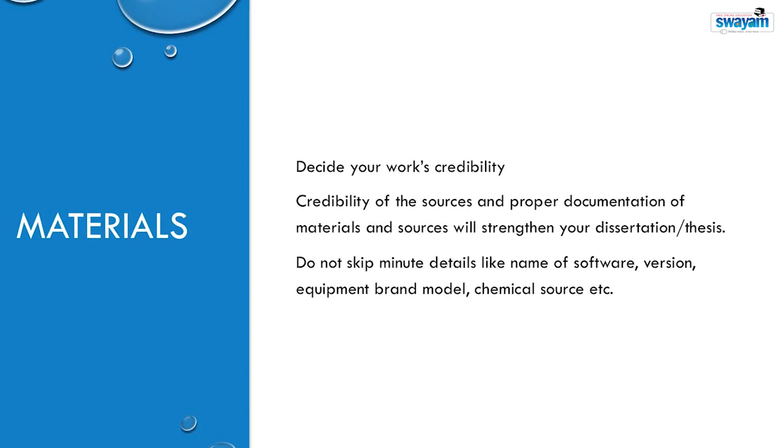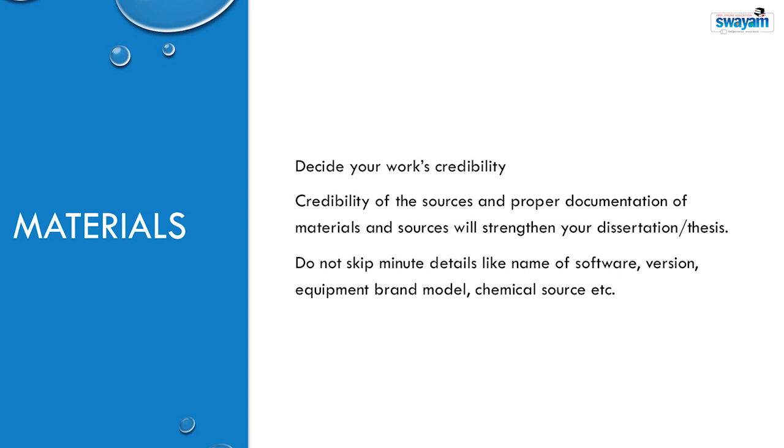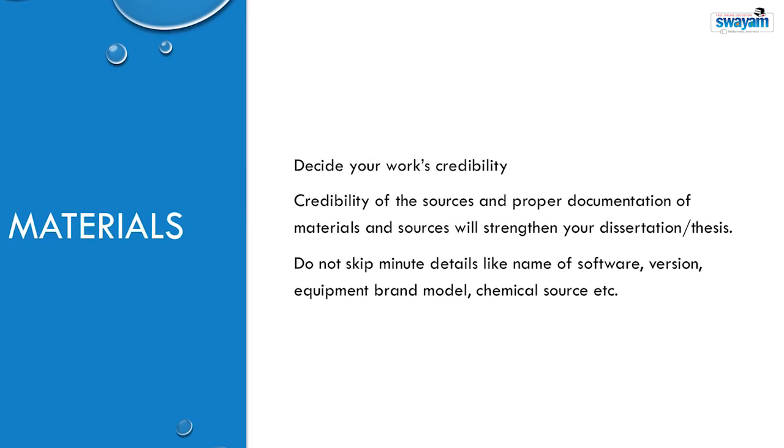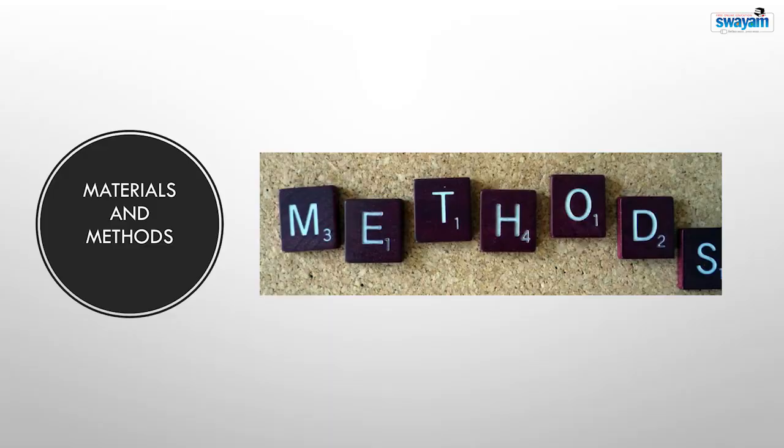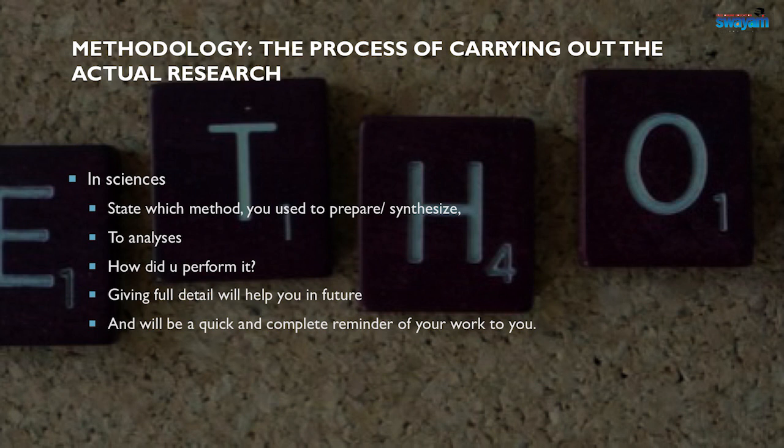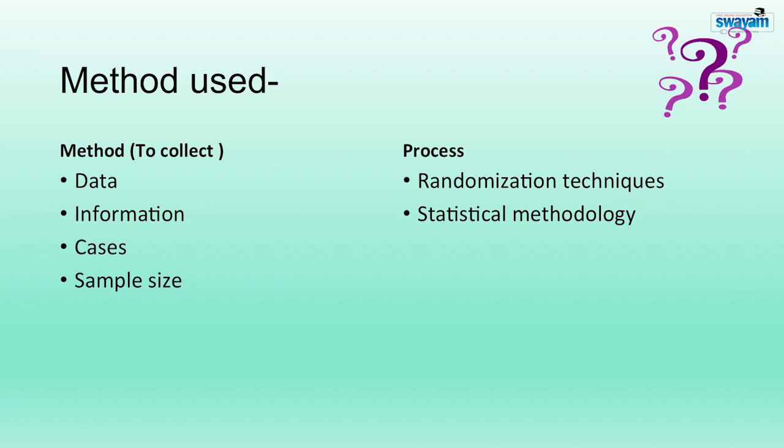Do not skip minute details like name of the software's version, equipment brand, model, chemical source, software etc. Now move to the method or methodology section. Methodology involves the process of carrying out the actual research. In case of sciences, state which method you use to prepare, synthesize, to analyze and how did you perform it. Giving full details will help you in future and will be a quick and complete reminder of your work. For humanities, you should state which method you use to collect data information.